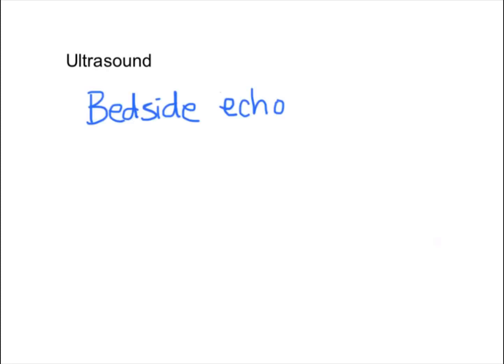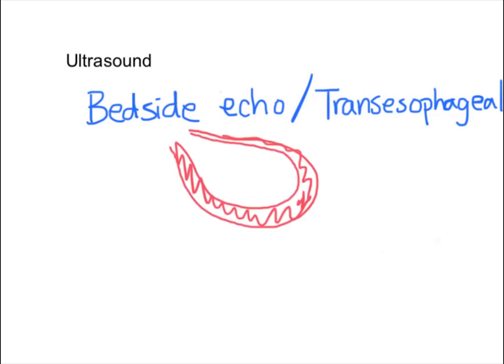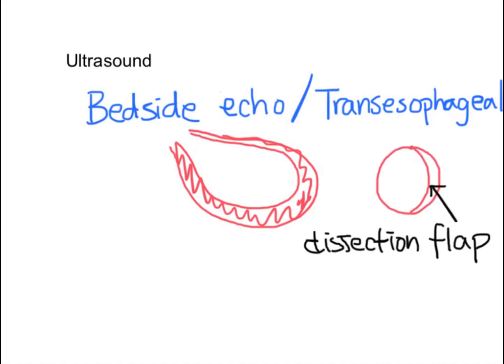How about ultrasound? Both a bedside transthoracic ultrasound and a transesophageal ultrasound can be used. Ultrasound can detect pericardial effusion and cardiac tamponade. Transesophageal ultrasound is more sensitive in picking up the dissection flap between the true and the false lumen. However, transesophageal ultrasound can only be done in patients who are intubated.